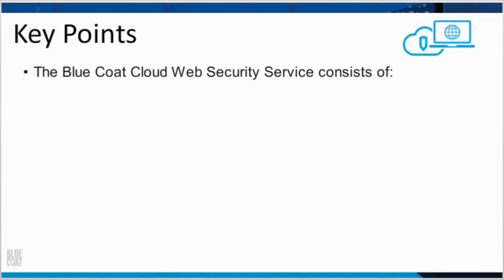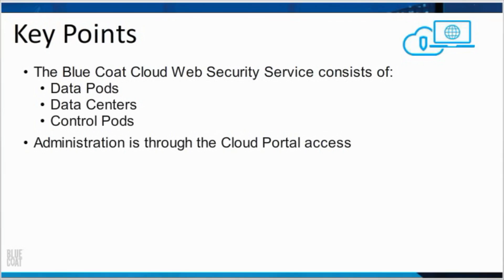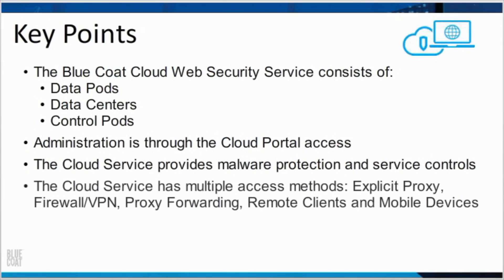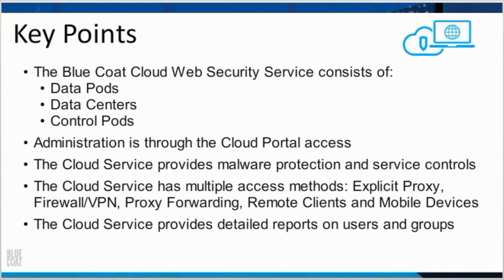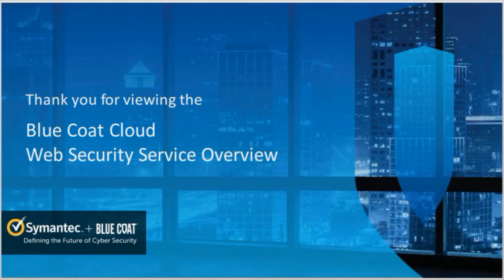The Bluecoat Cloud Web Security Service consists of data pods, data centers, and control pods. Administration is through the cloud portal access. The cloud service provides malware protection and service controls. The cloud service has multiple access methods: explicit proxy, firewall VPN, proxy forwarding, remote clients, and mobile devices. The cloud service provides detailed reports on users and groups. Thank you for viewing the Bluecoat Cloud Web Security Service overview.